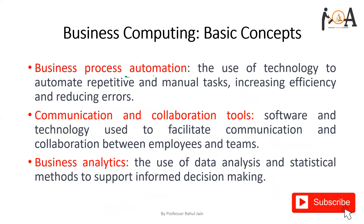If we talk about business process automation, it is the use of technology to automate repetitive and manual tasks. Some tasks in any industry are repetitive in nature and do not require any creativity, just repetition — like the entry of persons entering or visiting the office and making their schedules based on time efficiency. Business process automation can handle this, increasing efficiency and reducing errors.